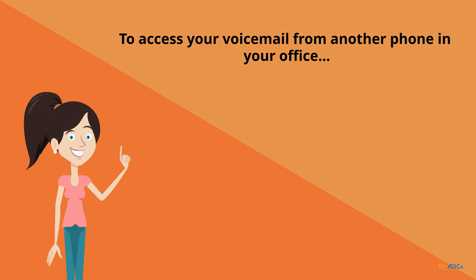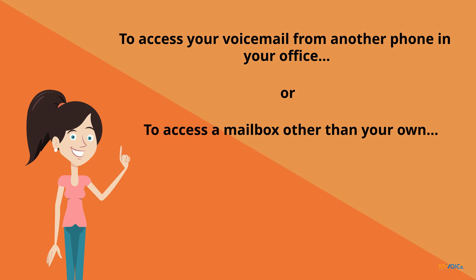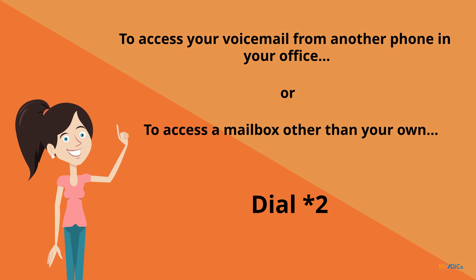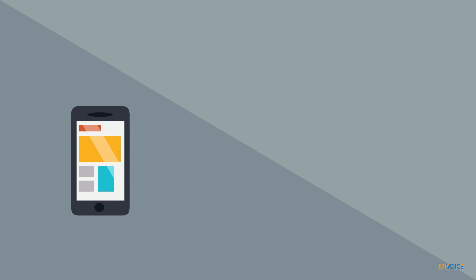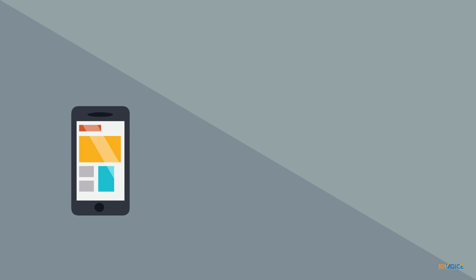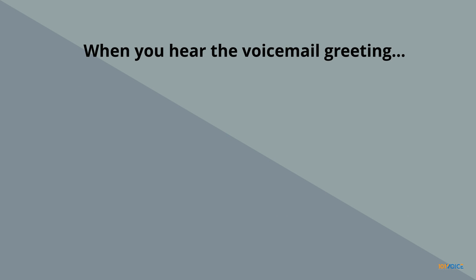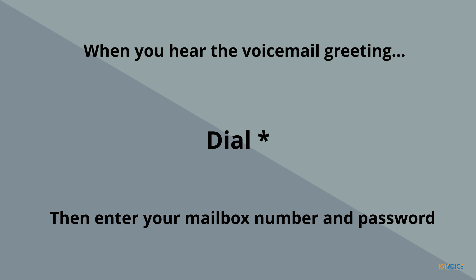Then select the appropriate mailbox and press play, or pick up the handset. To access your voicemail from another phone in your office, or to access a mailbox other than your own, dial star 2 to go to the voicemail portal. You can also access the portal by calling your phone from an outside number, such as your mobile phone. When you hear the voicemail greeting, dial star, then enter your mailbox number and password.